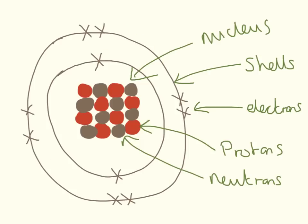I've drawn the electrons here as crosses and put them in pairs — that's just a chemistry convention. In chemistry you need to draw electrons as crosses and in pairs, but you don't have to. You also need to know that the nucleus, the bit in the middle, is the heavy bit. That's where all of the weight is concentrated.